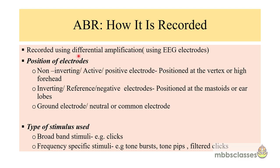ABR is a far-field recording, meaning it is recorded far away from the site of origin. There are three types of electrodes used. The first is the non-inverting or active or positive electrode, positioned at the vertex or high forehead. The second is the inverting or reference or negative electrode, positioned at the mastoid, ear lobes, or sometimes the nape of the neck. The third is the ground electrode, also called neutral or common electrode, placed most commonly on the cheek of the patient.